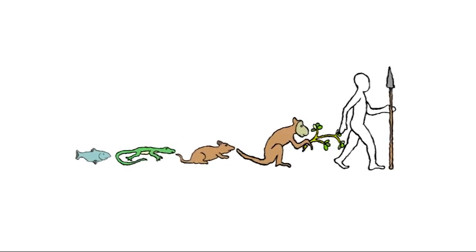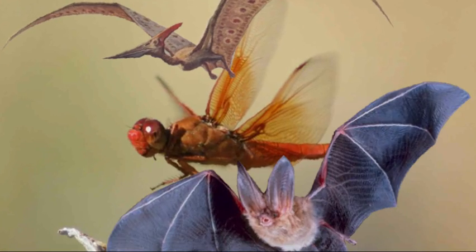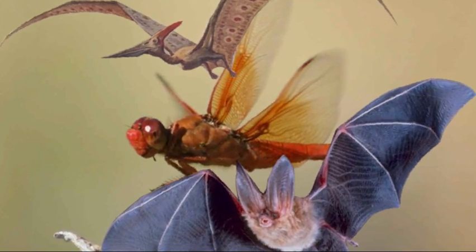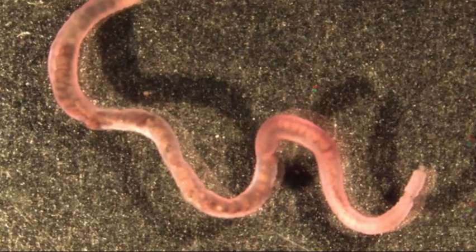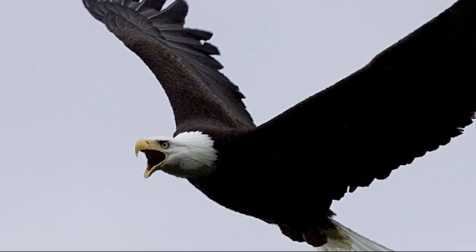Evolution converges on similar solutions to similar problems. Like insects, dinosaurs, and mammals all evolved wings, even though their common ancestor was probably some worm-like thing that lived in the ocean. Flying is awesome, and things that evolve flight are usually awesome at surviving.